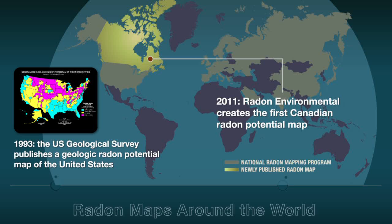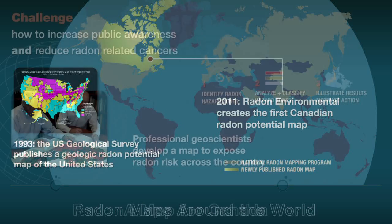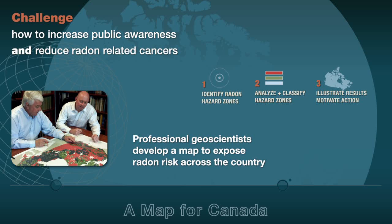Surprisingly, Canada did not have a radon map like the United States until 2011, when Radon Environmental published the Radon Potential Map of Canada. In 2010, our geologists teamed with geoscience professionals to develop the first geologic radon potential map. The objective was to illustrate the relative variation of risk across the country, increase public awareness, and ultimately reduce the number of deaths caused by radon-induced lung cancer. We felt the absence of a radon map was a significant gap in the information available to Canadians.